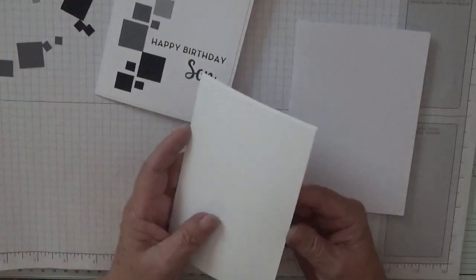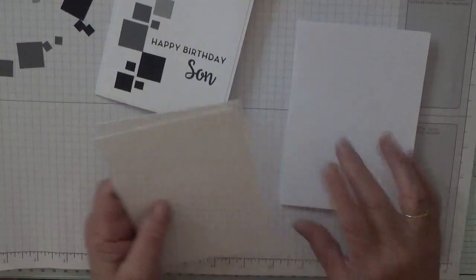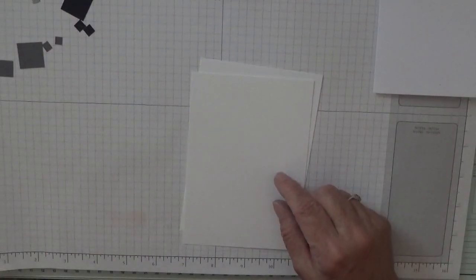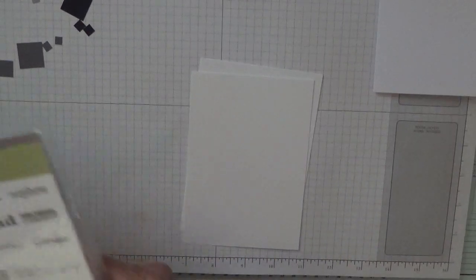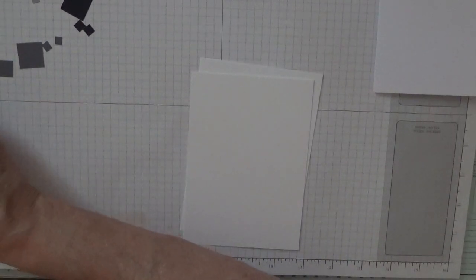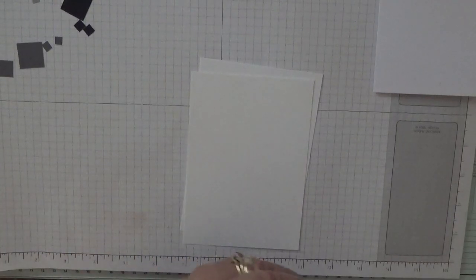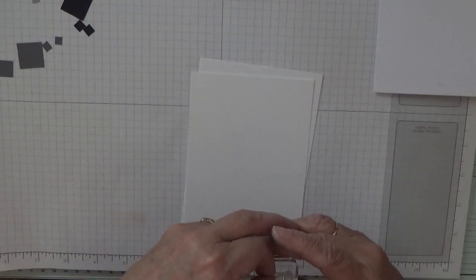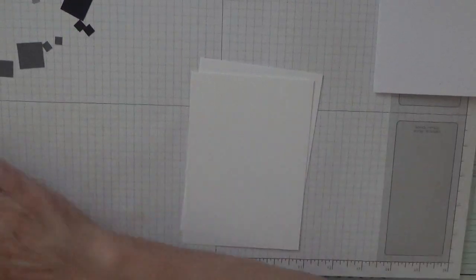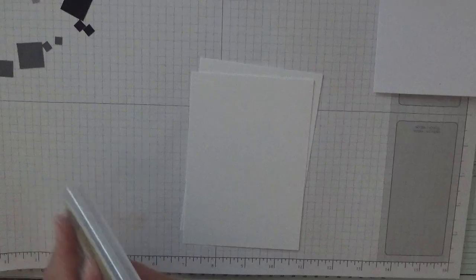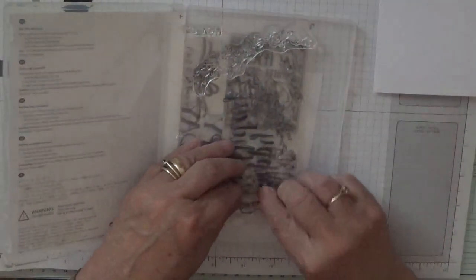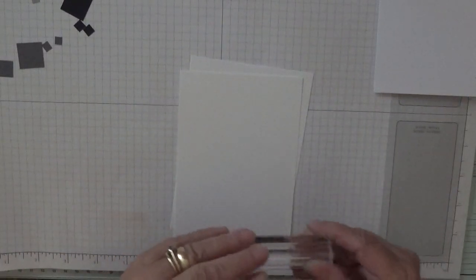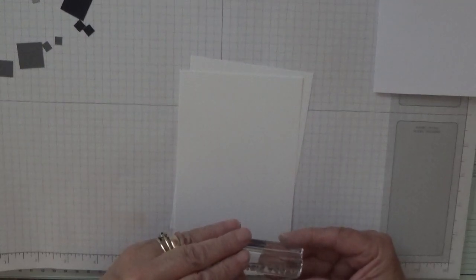I've also got two pieces of white card stock of five and five-eighths by three and seven-eighths. We're going to work on this one. We'll have our usual greetings of Son Island which is new and the Happy Birthday from Big On Birthdays, and that's all we need for our stamping in today's card.